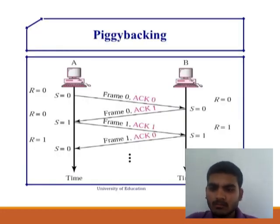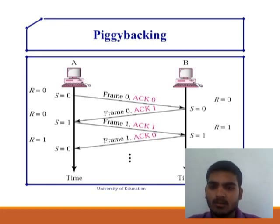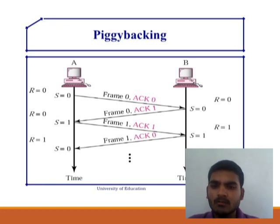In the diagram, first of all, one sender can send frame 0 and the acknowledgement can also be 0. Now the receiver can receive the acknowledgement and frame, and it can also send frame 0 to the sender side, and here the acknowledgement can be 1. The sender can receive the acknowledgement from the receiver side, then it can also send frame 1. The acknowledgement can be sent before the receiver side retrieves it — meaning the frame can be next and the acknowledgement can be previous. Now the receiver can receive frame 1 and acknowledgement 1, then the receiver can also send frame 1 and acknowledgement 0. This is the concept of Piggybacking.